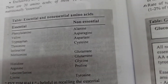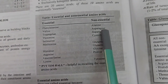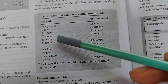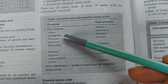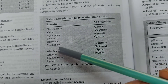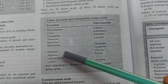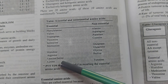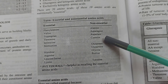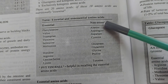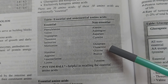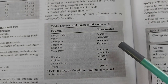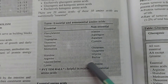Sometimes amino acids are classified as essential and non-essential. The essential amino acids are phenylalanine, valine, tryptophan, isoleucine, methionine, histidine, arginine, leucine, and threonine. The non-essential amino acids include alanine, asparagine, aspartate, cysteine, glutamate, glutamine, glycine, proline, and tyrosine.